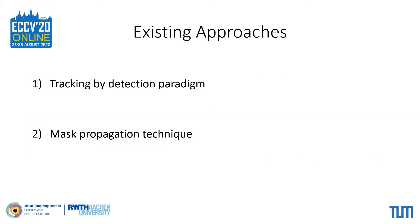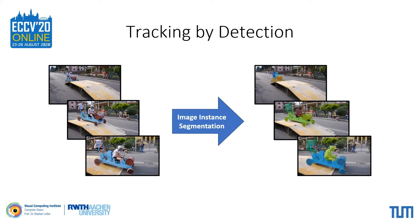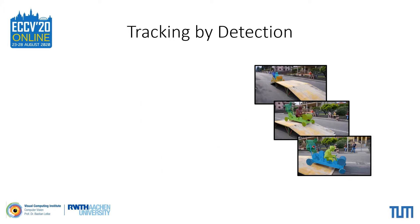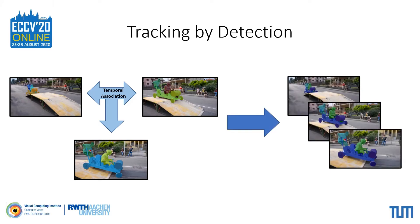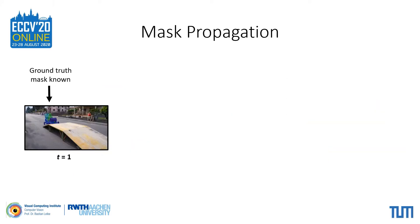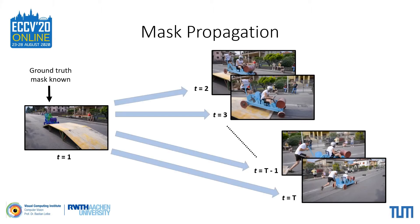Most existing approaches for this task can be roughly divided into two categories. In tracking by detection, an image-level object detector such as MaskRCNN is first applied to each video frame to obtain object proposals. These proposals are subsequently associated over time in a second step to obtain the final segmentation masks. The second category is based on mask propagation, where the ground truth mask for the first frame is known during inference, and the task is to propagate this mask to future frames.